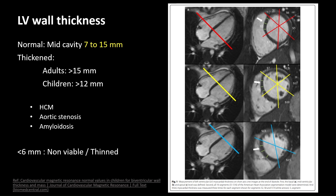Normal LV wall thickness is around 7 to 15 mm. In children, above 12 mm is considered thickened, and this can occur in conditions like hypertrophic cardiomyopathy, aortic stenosis, or amyloidosis. Below 6 mm is called thinned or non-viable myocardium.